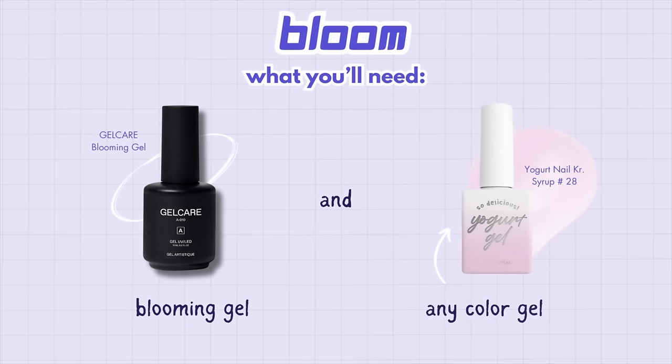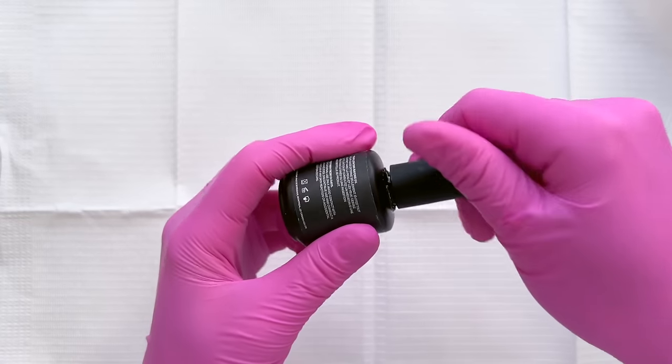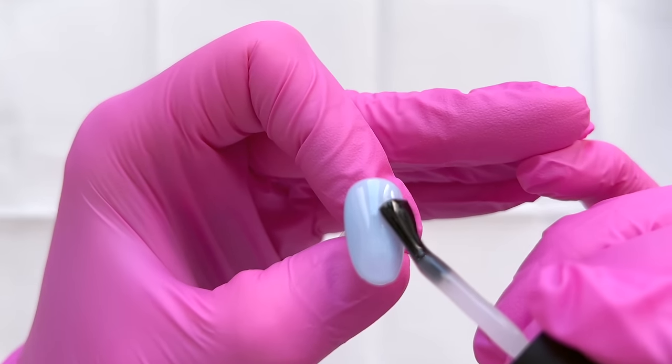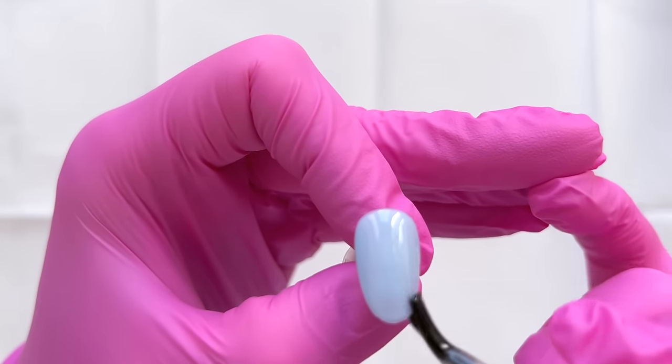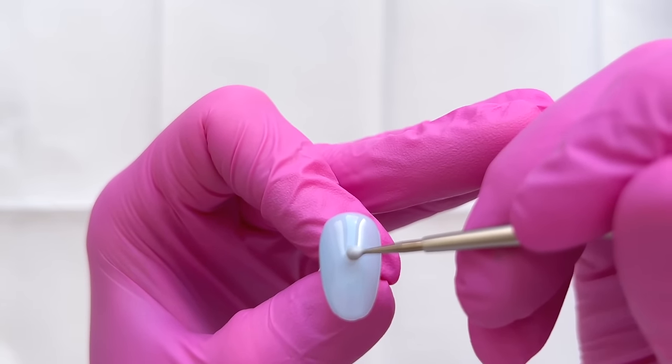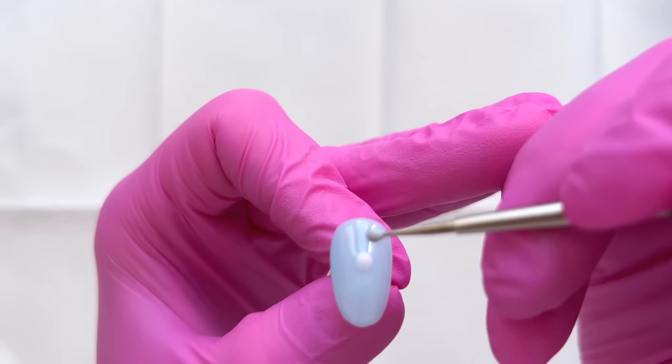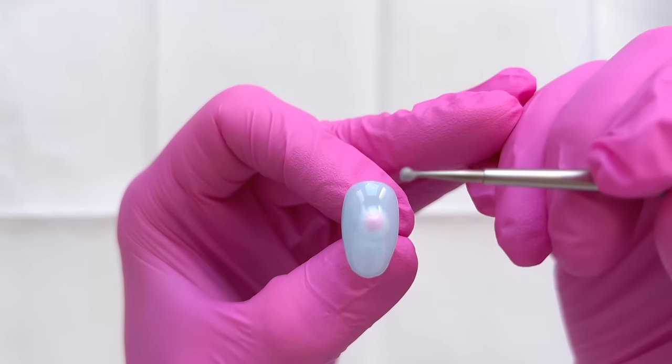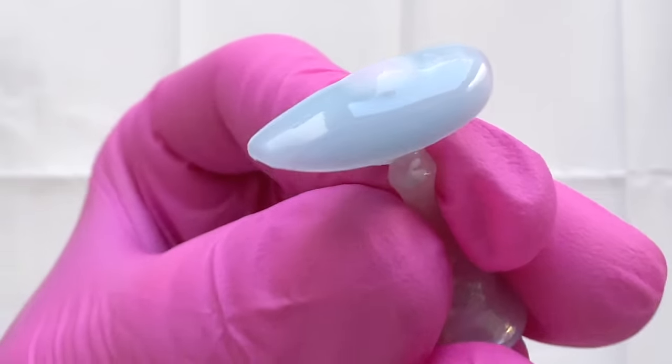Blooming gel is essentially the technique of using a base layer that allows anything that's applied on top of it to dissipate and or bloom outwards. For this technique, you're going to need blooming gel and really any color gel to place on top. So I started by adding a thin layer of blooming gel and then a dot of syrup gel, two dots of syrup gel directly into the wet blooming gel on top of one another and then giving them a minute to bloom outwards. For the context of this video, blooming gel is probably my least favorite technique just because I find it adds too much bulk to the nail.